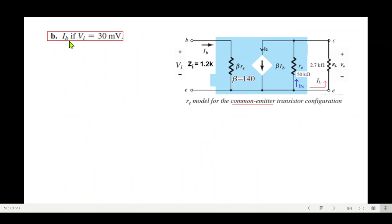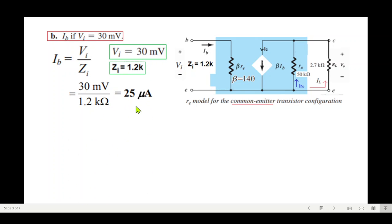Next, we have to find ib if vi is 30 millivolts. We know zi, so if vi input voltage divided by zi will give us ib. ib will be vi over zi. Plugging in both values, ib will be 25 microampere.